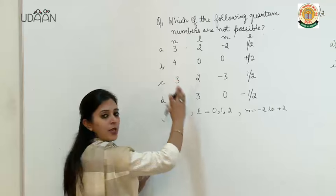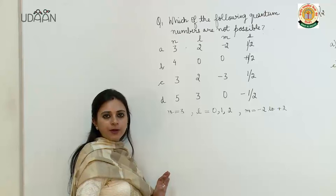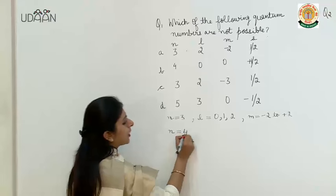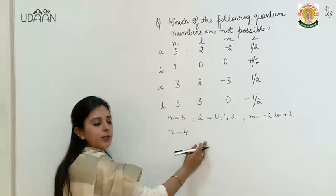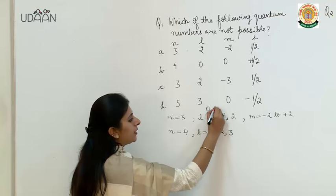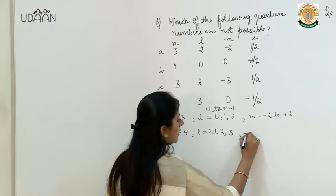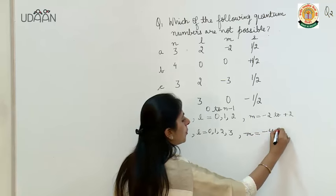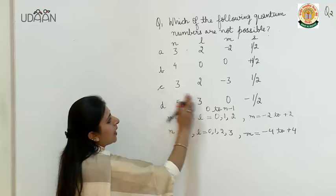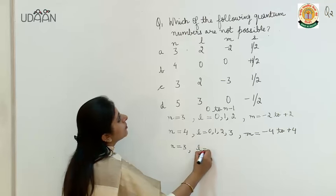Let us understand the next part. If n value is 4, then l value is 0. Now let us understand part c: if n value is 3, then l value is 2.